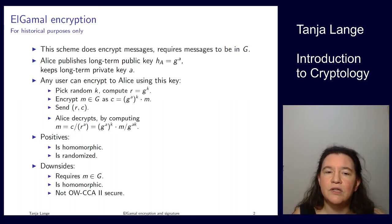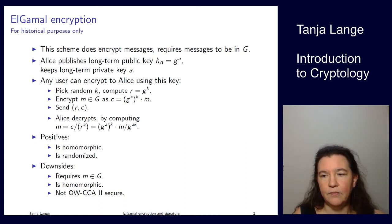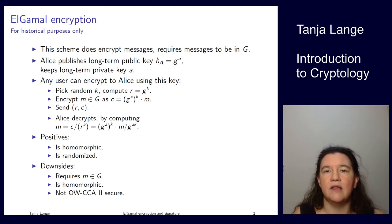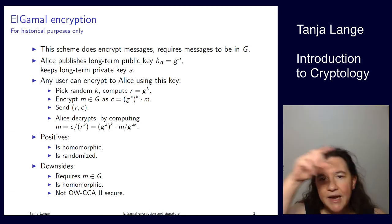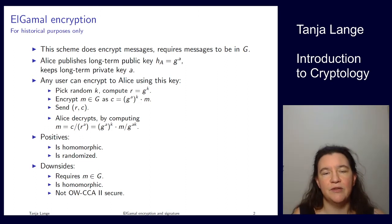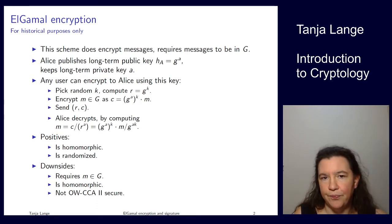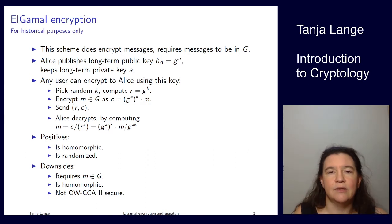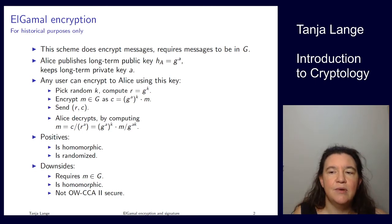Another downside — potentially more of an issue — is that it requires the message to be inside the group. In the Diffie-Hellman setting using the multiplicative group of a finite field with a generator that generates the entire multiplicative group (a primitive element), this is a very small restriction: the message is simply not allowed to be zero. And zero wouldn't be a good message to encrypt anyway. A positive is that it is a randomized scheme, which helps for anything except zero.